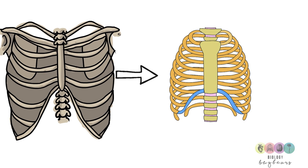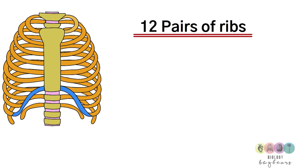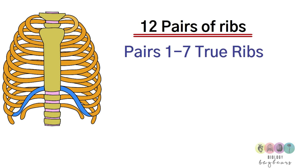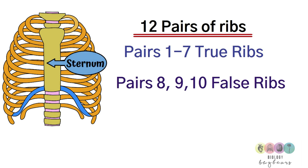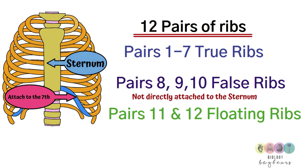Looking at this diagram, you should be able to recall that there are 12 pairs of ribs. Pairs 1 to 7 are known as true ribs because they attach directly at the front to the sternum — the breastbone. Pairs 8, 9, and 10 are false ribs because they do not attach directly to the sternum; they attach to the seventh rib. Then there are the last two pairs, 11 and 12 — they're the floating ribs, and they do not attach at all to the sternum.